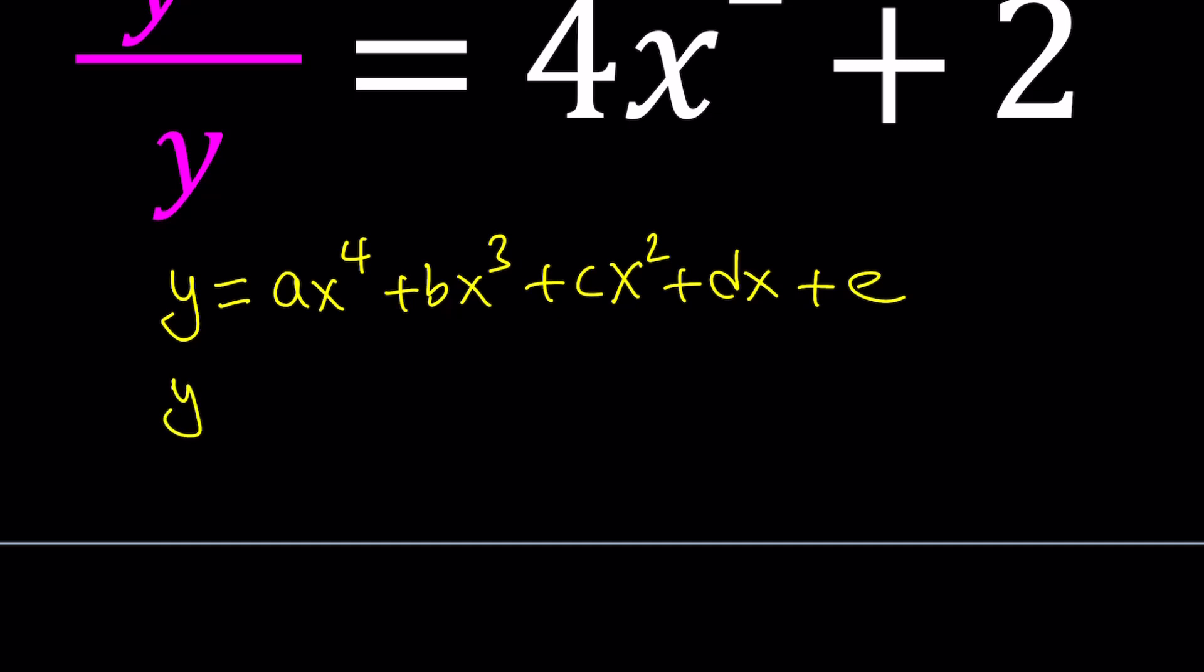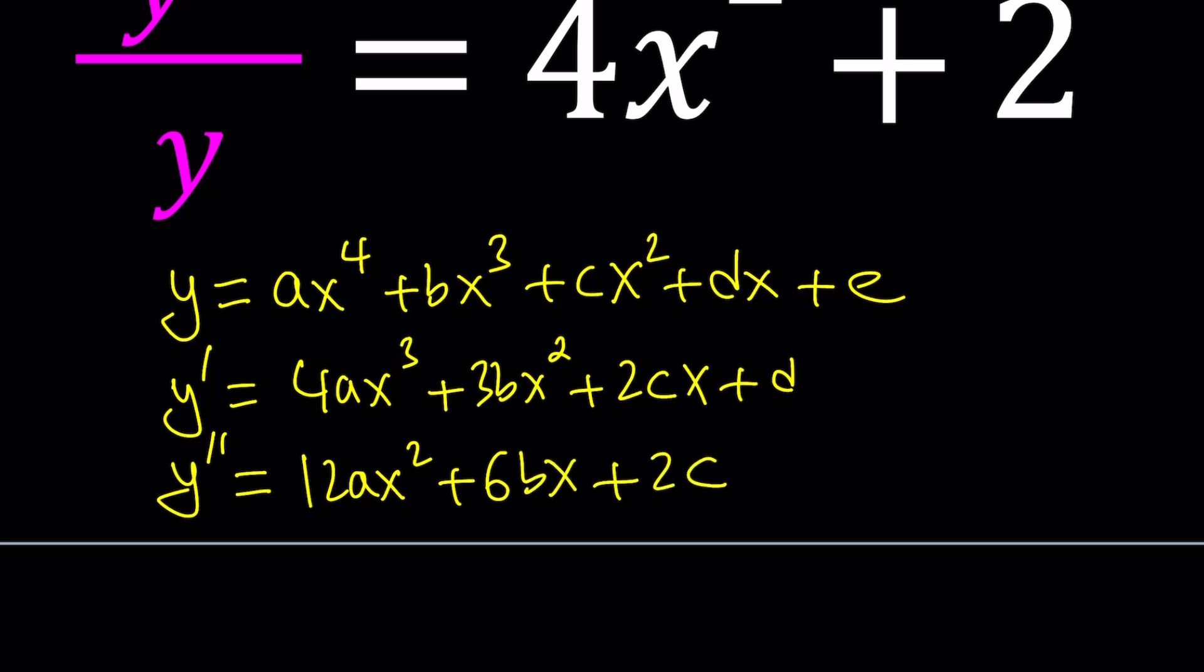And then if you differentiate once, you're going to get 4ax³ + 3bx² + 2cx + d. And then one more time for the second derivative, you're going to get 12ax² + 6bx + 2c. It wasn't planned, it just came up.